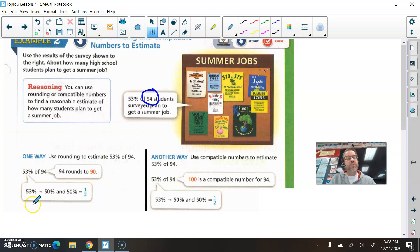So anyway, over here we'd have 50% or half of 90. Can you divide 90 by 2 mentally? It'd be 45, right? So 45 students plan to get summer jobs, approximately. Not exactly. Approximately.